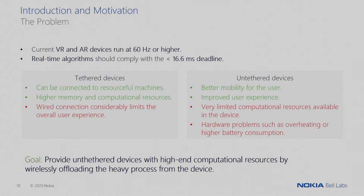There are two types of VR devices. Tethered devices are connected to very resourceful machines but via a physical wire, so even though they have higher memory and computational resources, the wire connection considerably limits the overall user experience. On the other hand, untethered devices give the user much better mobility and an improved user experience, but have very limited computational resources available on the device, along with problems like device overheating and high battery consumption. The goal is to provide untethered devices with high-end computational resources by wirelessly offloading the heavy processes from the device — and this is what we want to achieve for the egocentric human segmentation problem.